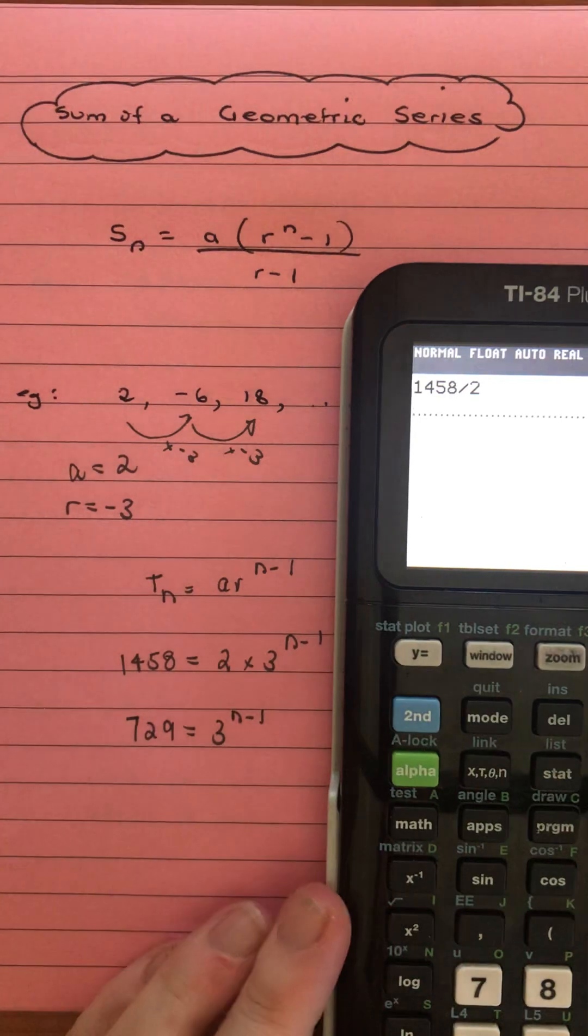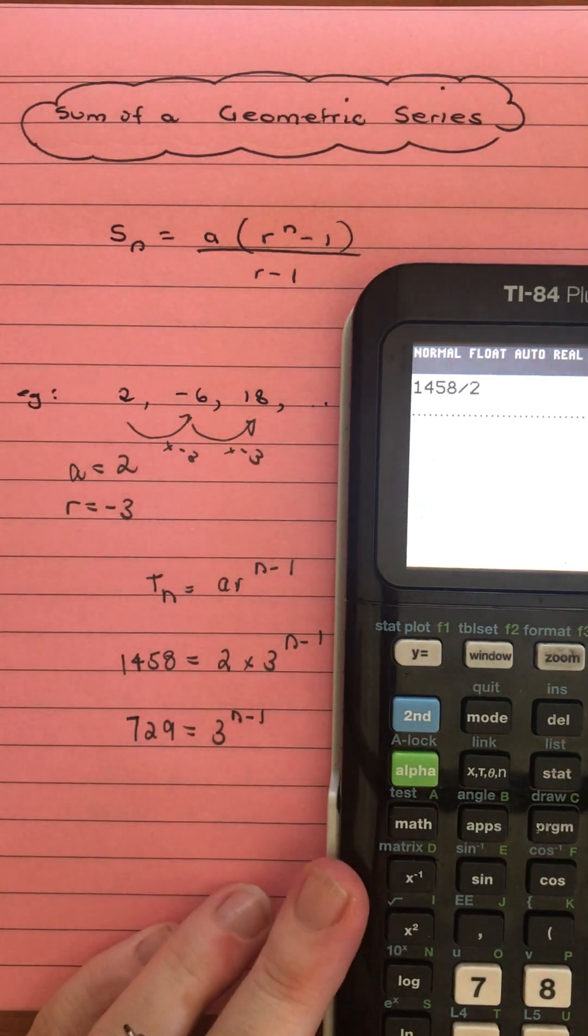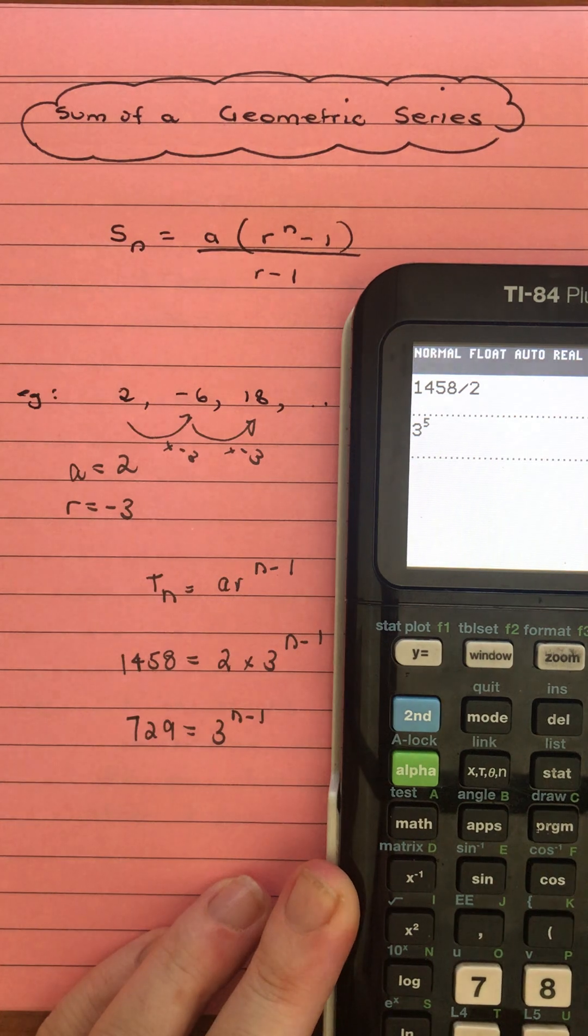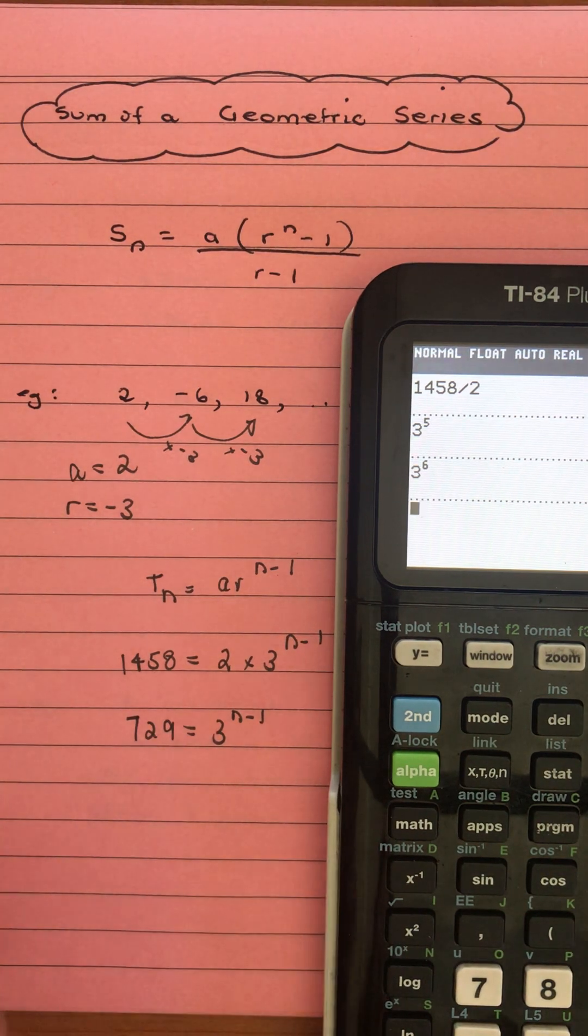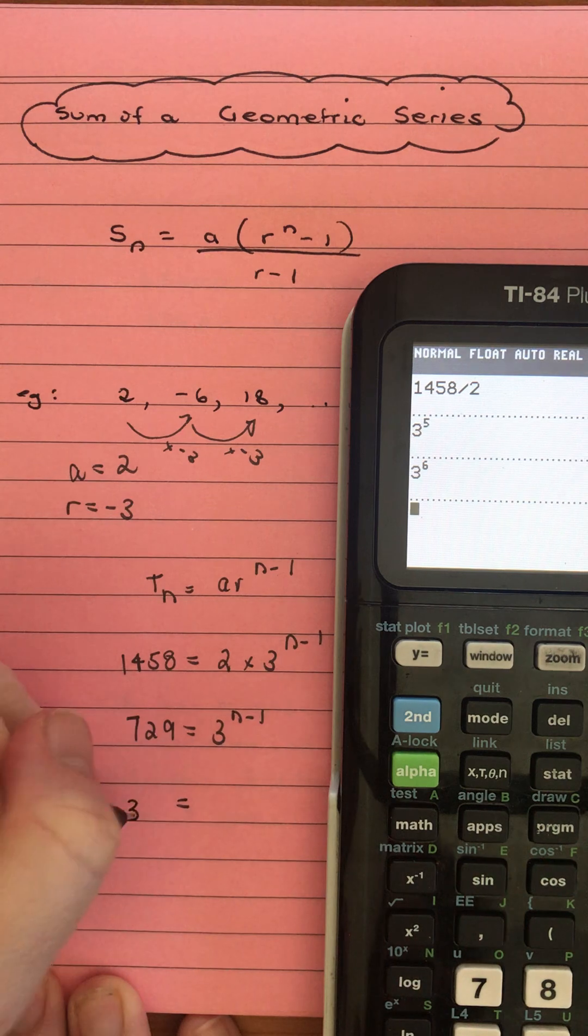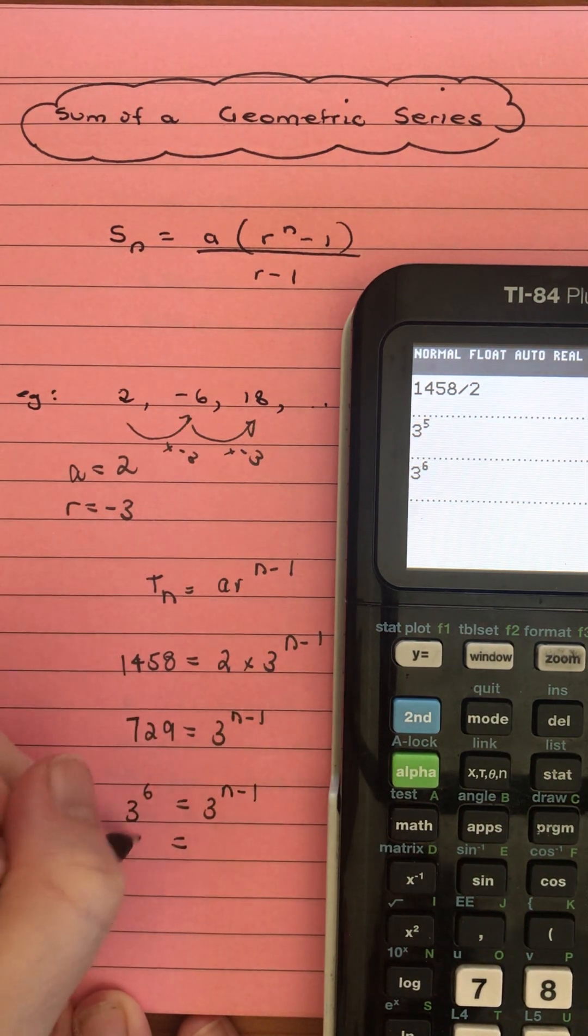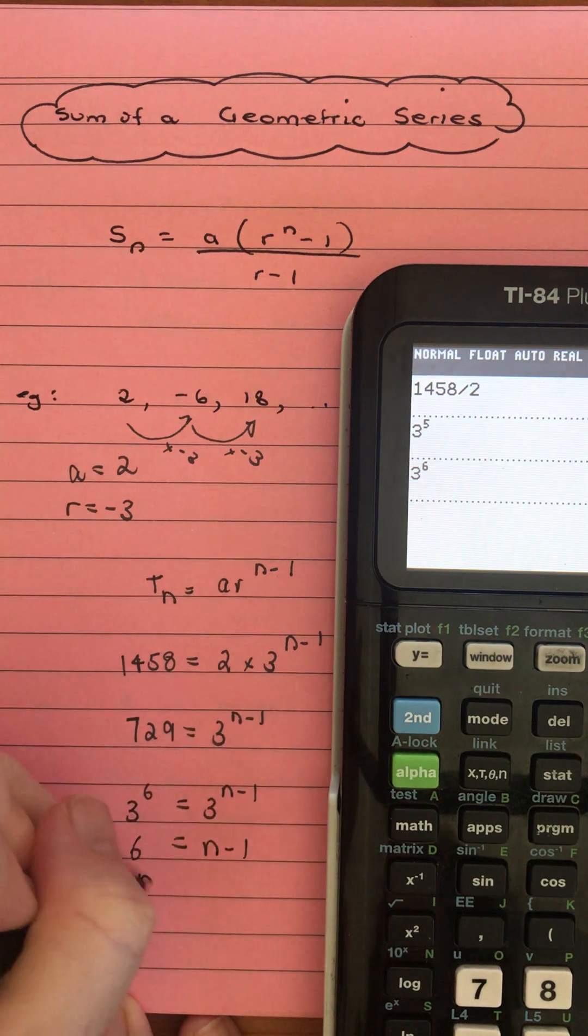Now a couple of options here. If you know your powers of 3, you might try a few, go 3^5, 3^6, and know that 729 is 3^6. So we will get 6 is equal to n-1, so n must equal 7.